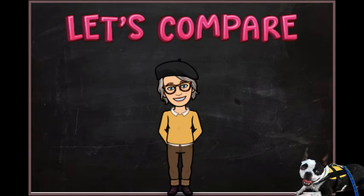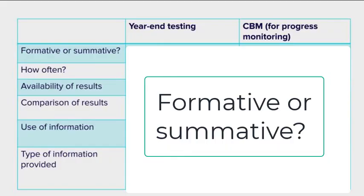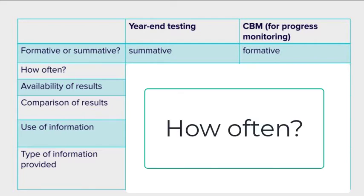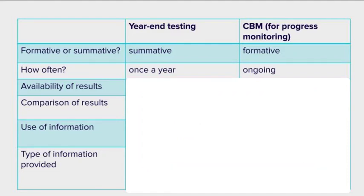Let's take a minute to compare CBM to assessments we already know about, like year-end testing. Looking at this chart: is it formative or summative? Year-end testing is definitely summative; CBM is a formative assessment. How often is it administered? Year-end testing — once a year. CBM for progress monitoring is ongoing and could be as often as once a week to every couple of weeks, depending on what we're measuring. Availability of results: we don't get year-end testing results until many weeks or sometimes months later, but with CBM we get results immediately after administering the assessment.